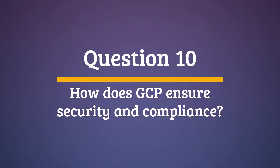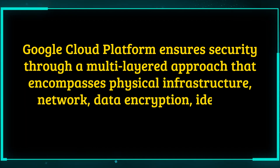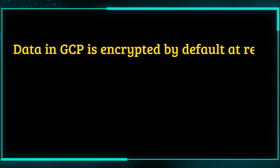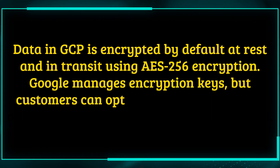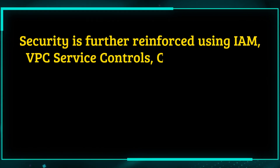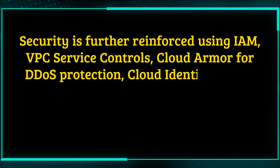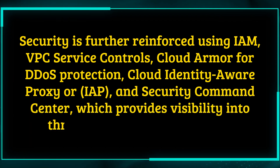Question 10. How does GCP ensure security and compliance? Google Cloud Platform ensures security through a multi-layered approach that encompasses physical infrastructure, network, data encryption, identity management, and threat detection. Data in GCP is encrypted by default at rest and in transit using AES-256 encryption. Google manages encryption keys, but customers can opt for customer-managed or customer-supplied keys for added control. Security is further reinforced using IAM, VPC service controls, Cloud Armor for DDoS protection, Cloud Identity-Aware Proxy, or IAP, and Security Command Center, which provides visibility into threats and misconfigurations.